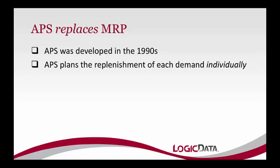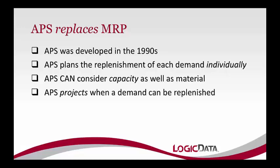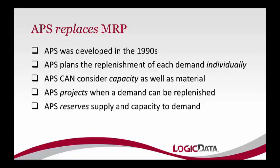Rather than netting level by level like MRP, APS plans the replenishment of each demand individually. It can look at your actual capacities and constrain the plan by your capacity, and will always load your capacity to tell you how much is required to meet your plan. It then projects when that requirement can be replenished. Once you've accepted APS's plan, it reserves the inventory, purchase order supply, jobs, machines, and people necessary — locking them in against that promise, giving you confidence when you commit to a ship date.